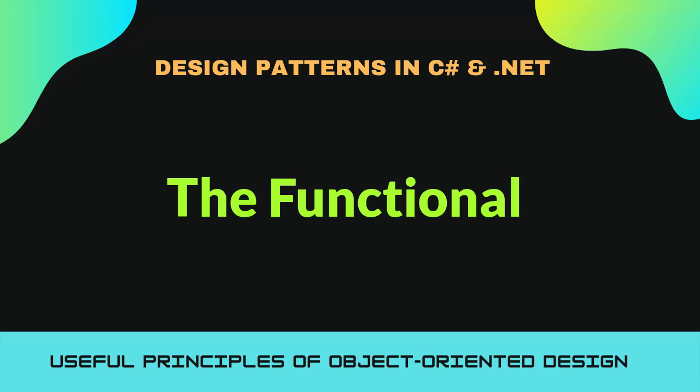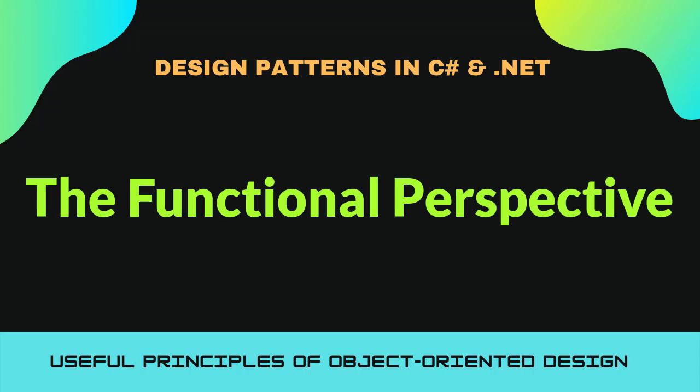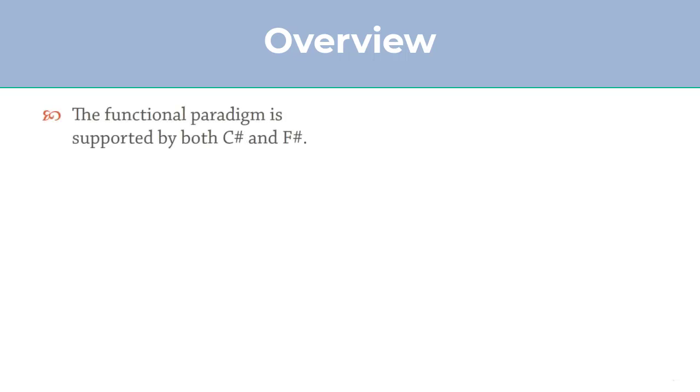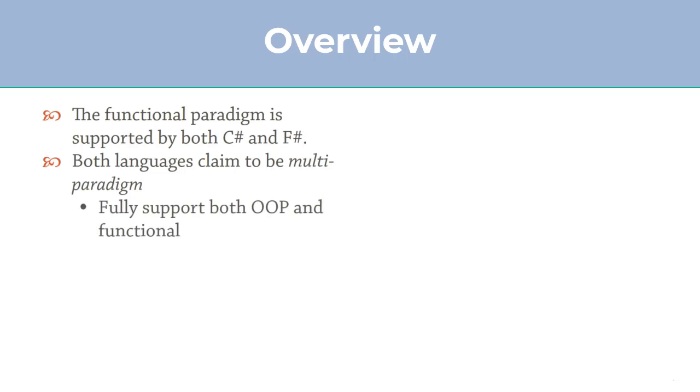We're now going to take a look at a very strange slice of the .NET ecosystem - the functional perspective and the F# programming language. You're probably thinking: why does this section exist? This course is about Gang of Four patterns, which are object-oriented. The functional paradigm is actually supported in both C# and F#, and both languages claim to be multi-paradigm, meaning they fully support both object-oriented and functional programming.